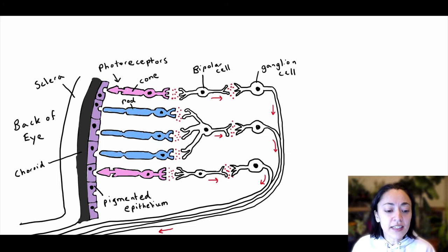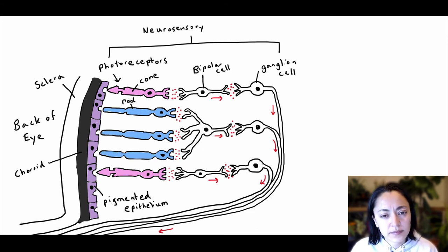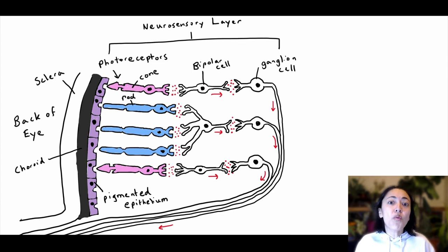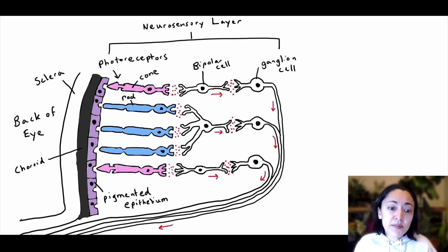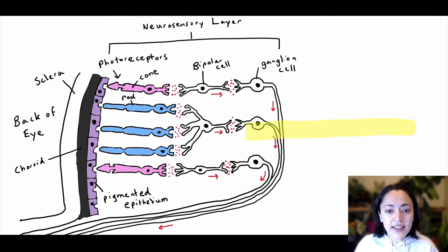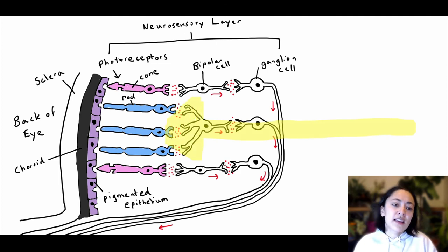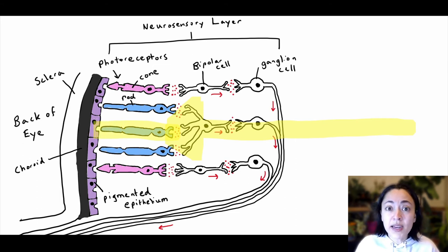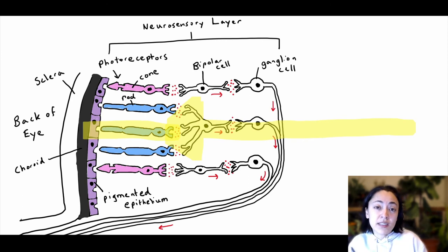The retina is composed of the pigmented epithelium and the neurosensory layer. The neurosensory layer is composed of the photoreceptors, bipolar cells, and ganglion cells. The ganglion cells and bipolar cells are transparent, which is important because light enters the eye and has to travel through the ganglion cells and through the bipolar cells before it can be absorbed by the photoreceptor cells. Any light not absorbed by the photoreceptors will be absorbed by the pigmented epithelium or by the choroid.